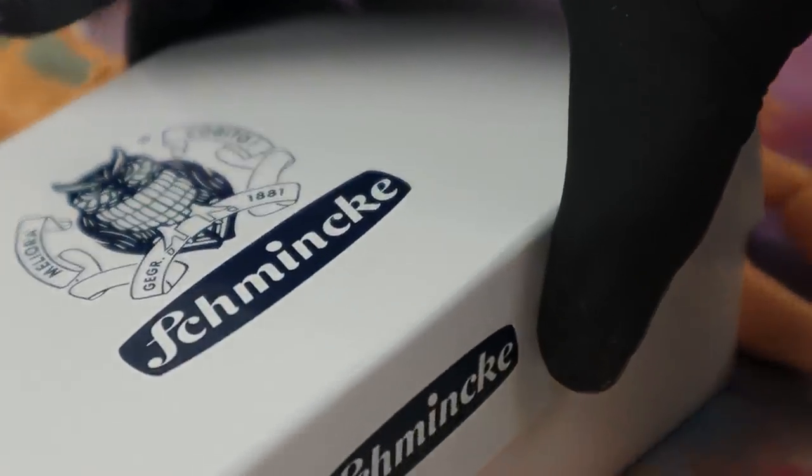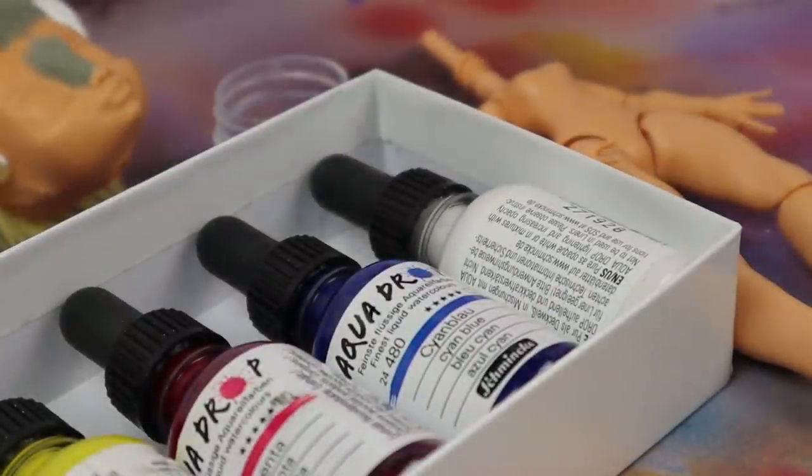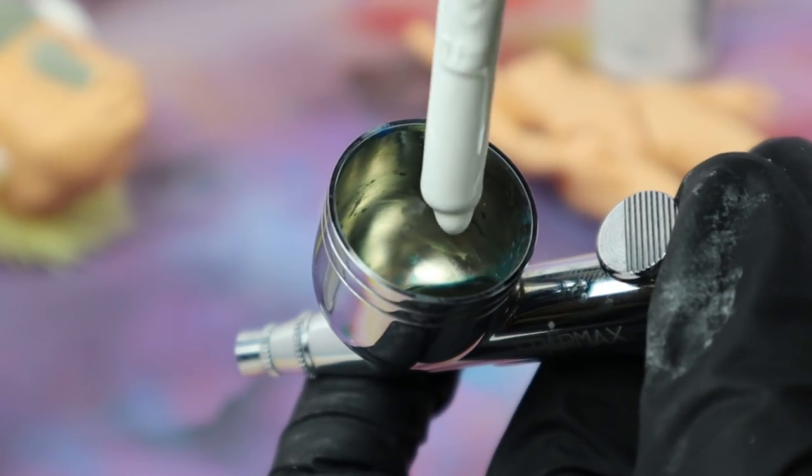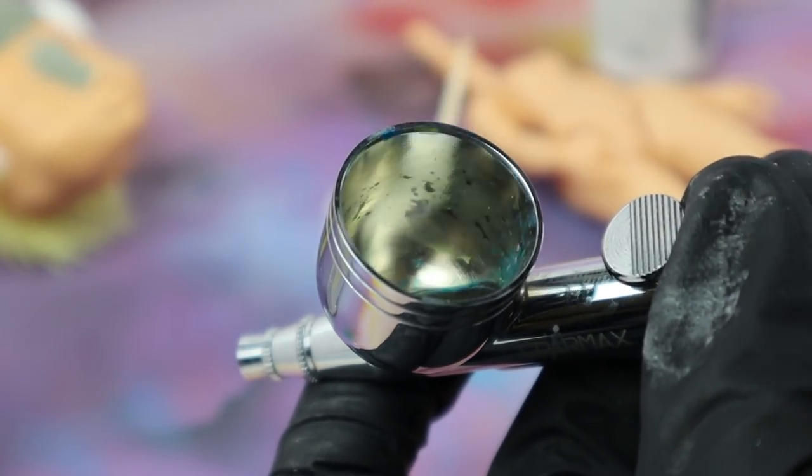Then after some sanding I took it all to the airbrush station. It's just a cardboard box, but you know, I call it a station. Same principle as with the spines. A lot of white and some orange.